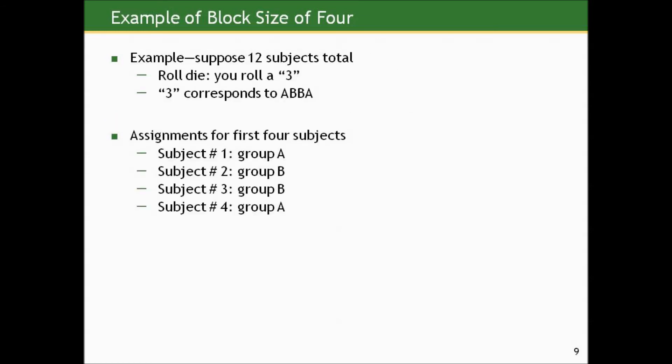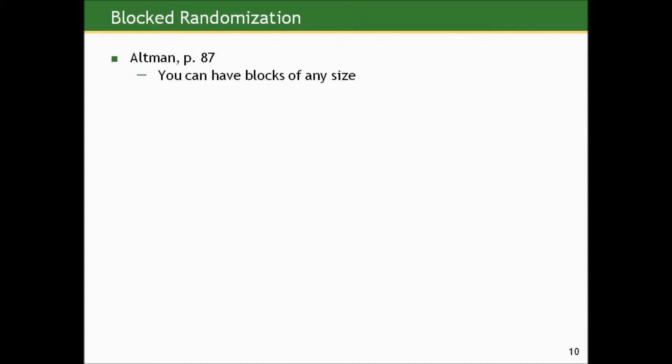So for example, suppose we had a total of 12 subjects. And we roll a die and we get a three. Well, in that listing I showed you before, three corresponds to the pattern A, B, B, A, ABBA, which I don't know if you know this, but that's actually how that Swedish super group took their name. So if you actually take the assignments for the first four subjects based on the schema, subject number one would go to group A. Subjects two and three would go to group B. Subject four would go to group A.